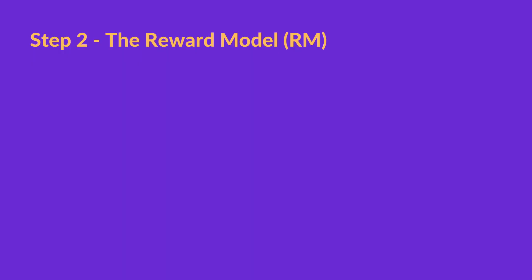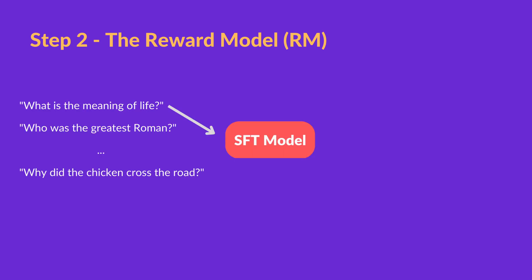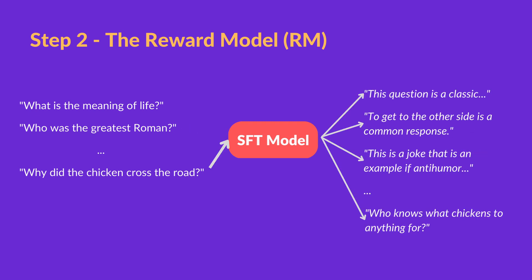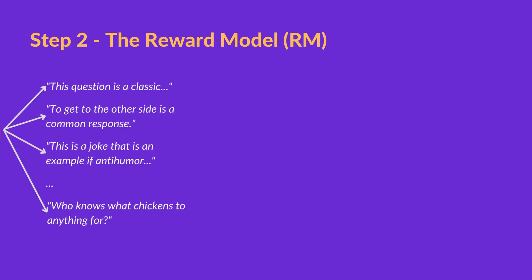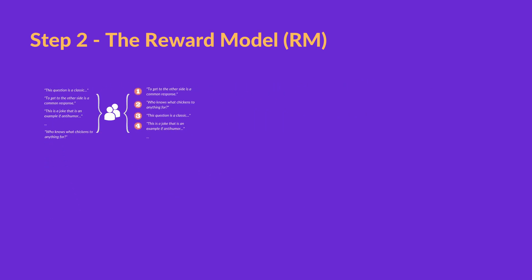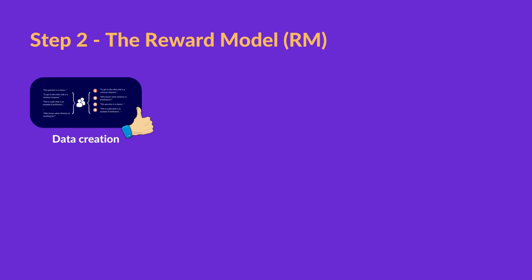The goal of the reward model is to learn an objective function directly from the data. For a list of prompts, the SFT model generates multiple outputs — anywhere between 4 to 9. Labelers then rank the outputs from best to worst. The result is a new labeled dataset where the rankings are the labels. Since ranking the outputs is easier than coming up with them from scratch, this is a much more scalable process.